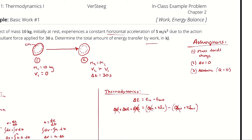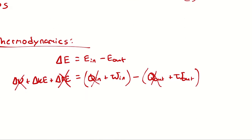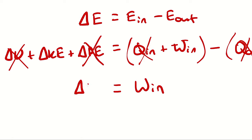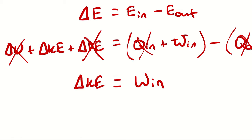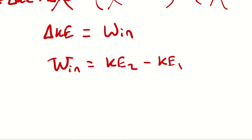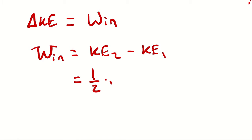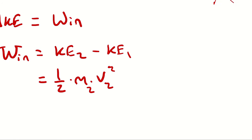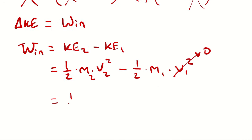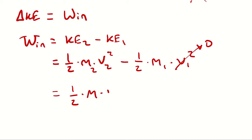There is only one opportunity for work here: to change the kinetic energy. You could describe this as a net work in. Work in must equal the change in kinetic energy of our system. So work in equals KE2 minus KE1, which is one-half times mass times v2 squared minus one-half times mass one times v1 squared. Since velocity one was zero, this is just one-half times mass times v2 squared. We know mass, but we don't know velocity.